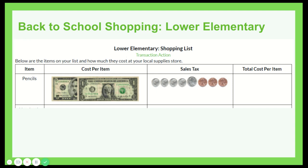Now let's look at how this might affect you in back-to-school shopping. If you're in the early elementary grades, you'll probably want to do our lower elementary handout. This is where you can look at the pictures of the money to total up how much you might pay per item. For instance, let's say you've got a pack of pencils. You can look in the first column to see how much the item actually costs and then total up — based on the picture — the sales tax you'd have to pay.